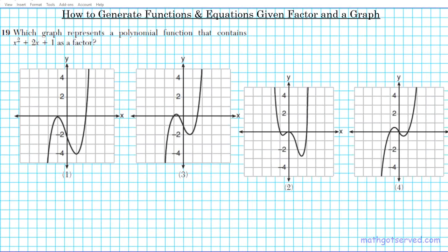Let's look at question 19. We're looking at how to generate functions and equations given a factor and a graph. Question 19 reads: which graph represents a polynomial function that contains x squared plus 2x plus 1 as a factor? That is not the function — we're given a polynomial that contains this as a factor. This is just a factor, not the entire polynomial function.